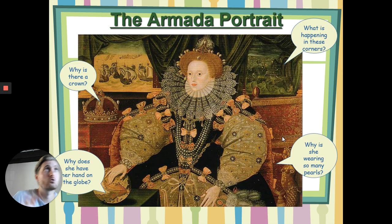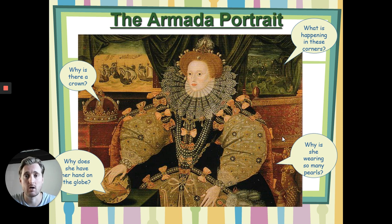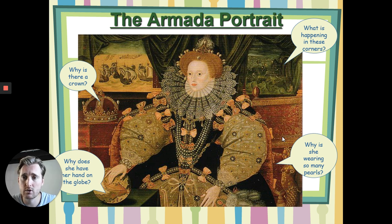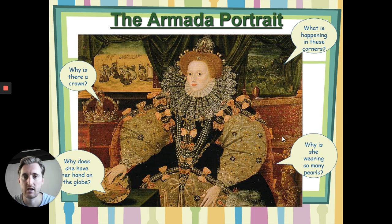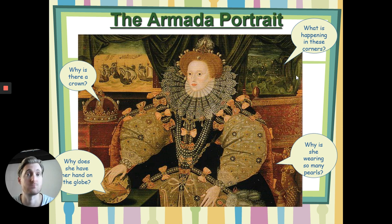So I want you to compare your drawing — you've added things that are important to you. This is a famous picture called the Armada portrait, and we're going to look next lesson at the Spanish Armada and its significance. I want you to look at this picture and the questions around it, because this is a portrait of Elizabeth, and these are the things that are important to her. Why is there a crown? Why does she have her hand on the globe? Why is she wearing so many pearls? And what is happening in each of these corners? When you're ready to see the answers, please press play.